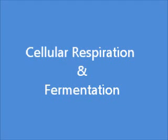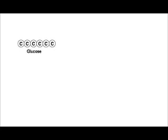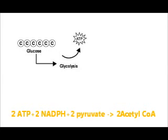Cellular Respiration and Fermentation. Cellular respiration begins with a 6-carbon molecule called glucose. Glucose is broken down by the catabolic process of glycolysis, yielding 2 ATP, 2 NADPH, and 2 pyruvate.